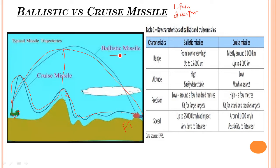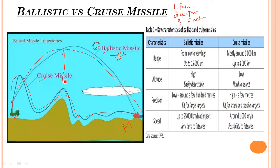For example, the ballistic missile is long range — it can go intercontinental. The cruise missile is short range and stays low. A ballistic missile uses a rocket engine with multiple stages — stage 1, stage 2, stage 3 — then a warhead is fixed. A cruise missile uses a jet engine.